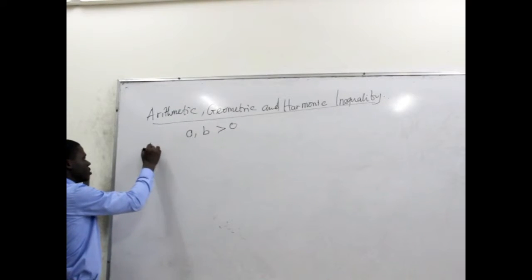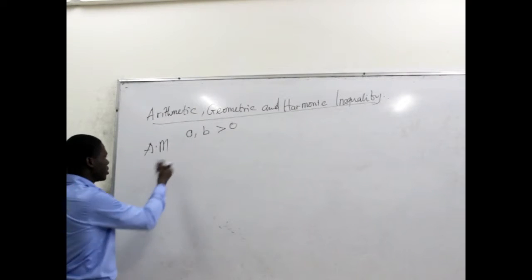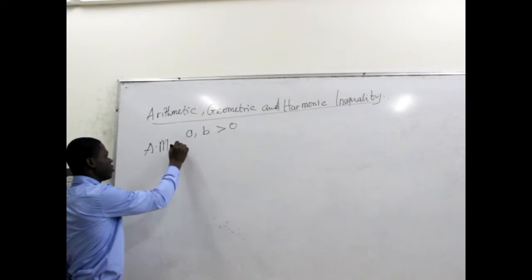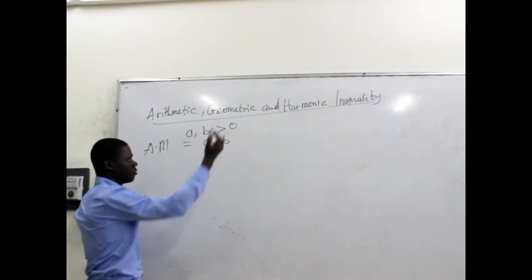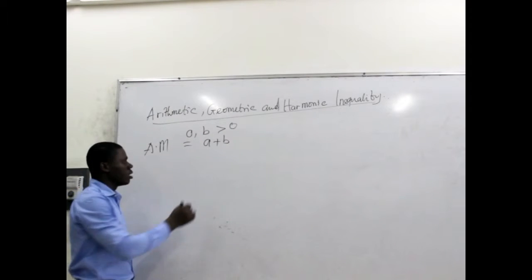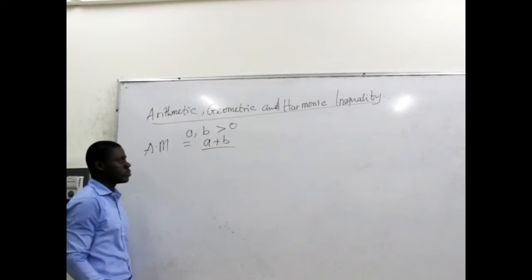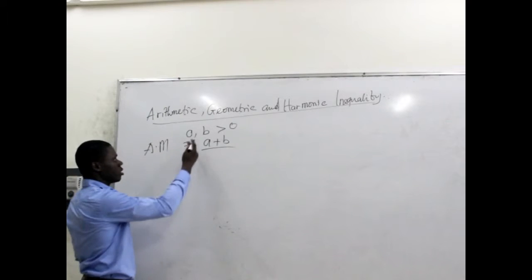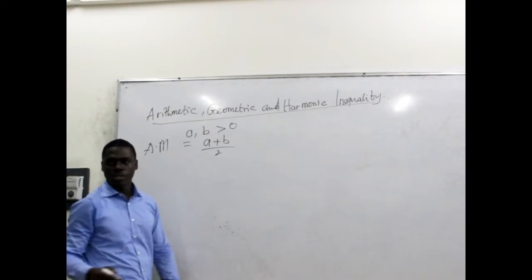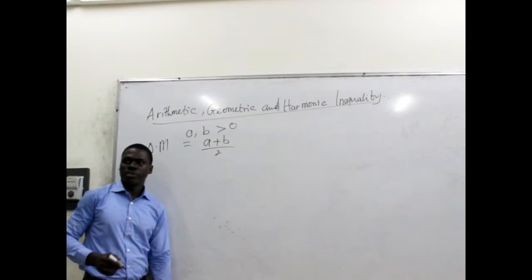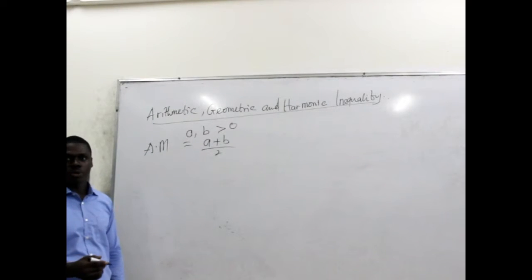We can calculate arithmetic mean as the sum of the observations divided by the number of terms. So we have two of them — A and B — and the arithmetic mean will be given as A plus B divided by 2.